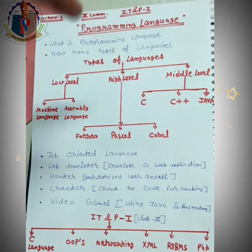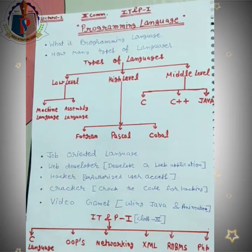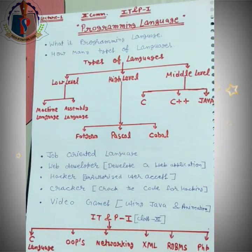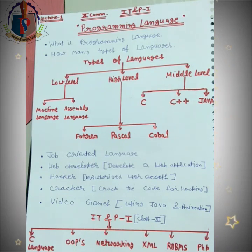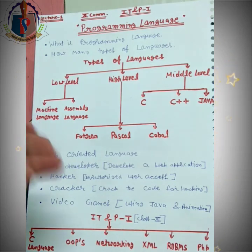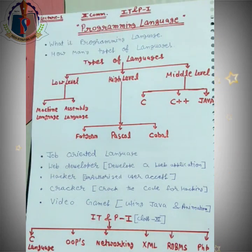Jab hum baat karte hain high level language ki, toh aapne dekha hoga scientific calculation ya science ki field mein — jahan rocket wagera use kiye jaate hain, jahan hamare space centers hote hain — wahan jo bade-bade computers kaam mein aate hain, unme high level language use ki jaati hai. For example: FORTRAN, Pascal, and COBOL.